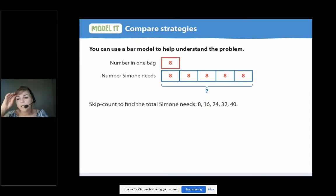Now, if you have a book, I want you to underline the words skip count right there under the bar model. If you don't have a book, just point to those words here on the screen. Read the numbers that Simone skip counted with me. Here we go. Eight, sixteen, twenty-four, thirty-two, forty.